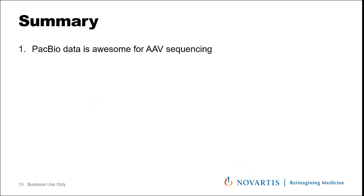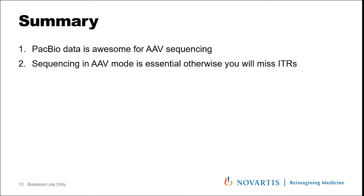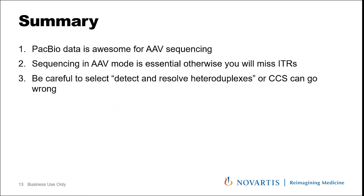To summarize: PacBio data is awesome for AAV sequencing. Sequencing in AAV mode is essential — otherwise you will miss the ITR sequences because they will by default be removed by the standard processing that gets rid of SMRTbells. Be careful: make sure that 'Detect and Resolve Heteroduplexes' is also selected — it is selected by default, so just resist the temptation to deselect it, otherwise CCS will go horribly wrong. It's easy to tell if this has happened because you will have very low quality reads that are 4 kb long — where you'd normally expect Q90, you might see Q5 or Q10.